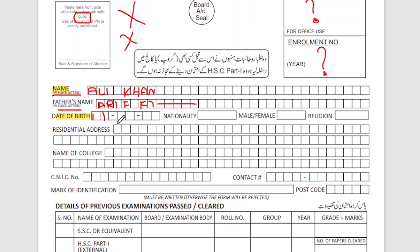For example, if the date of birth is 11 November, you write 11 November in the form exactly as it appears in your documents.